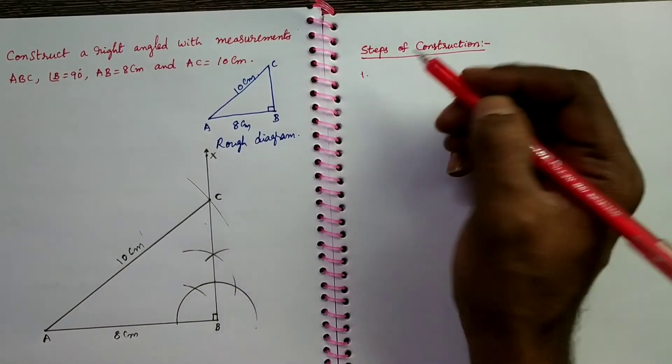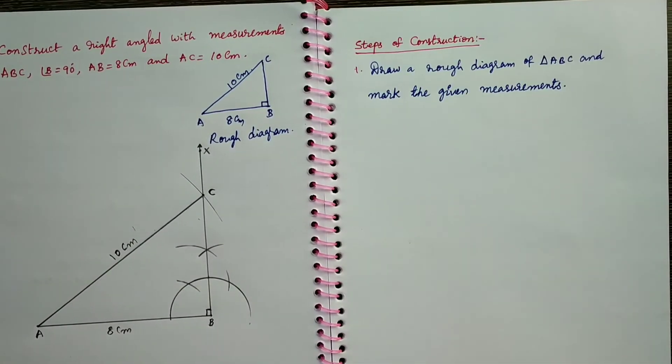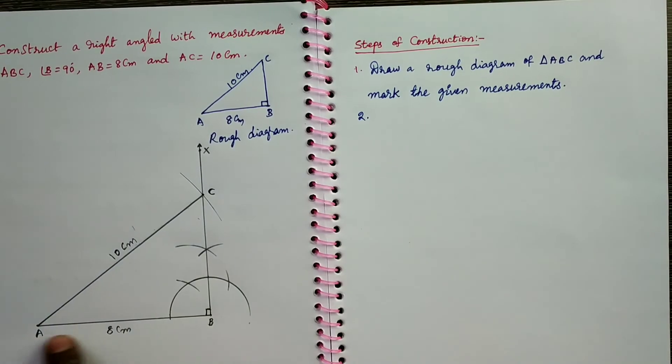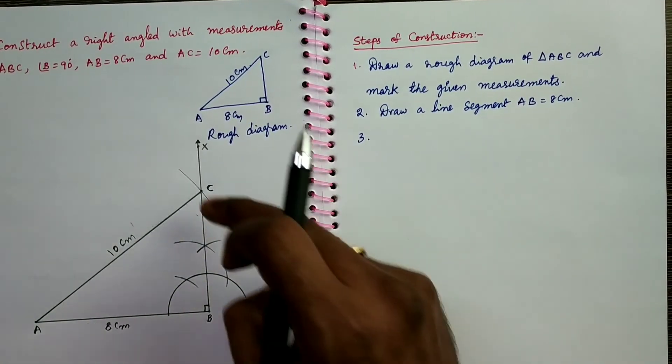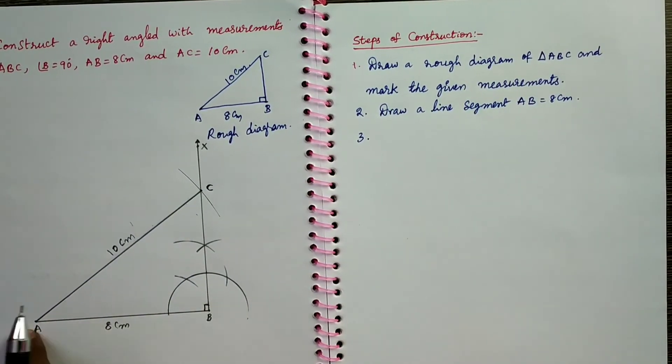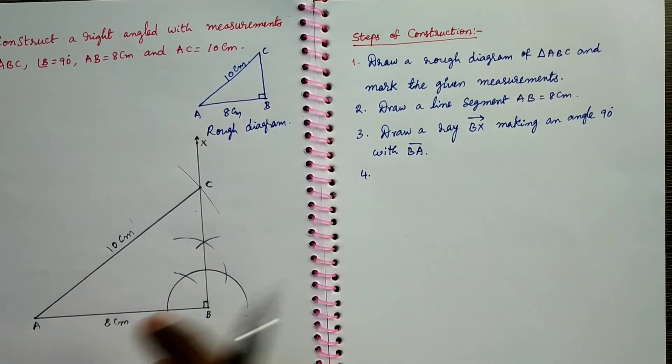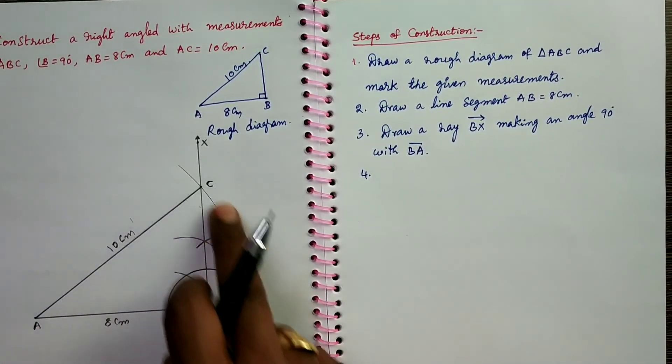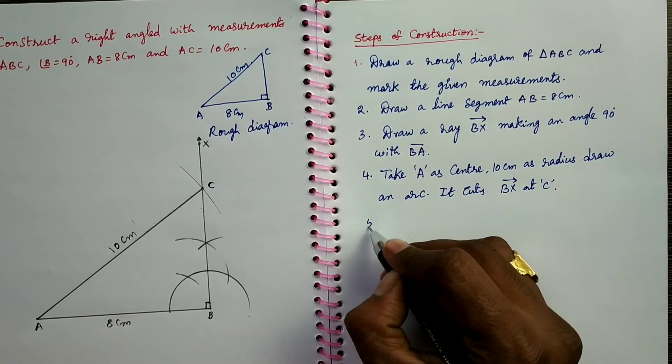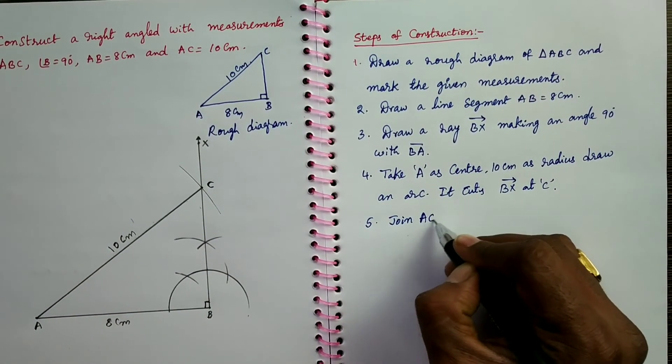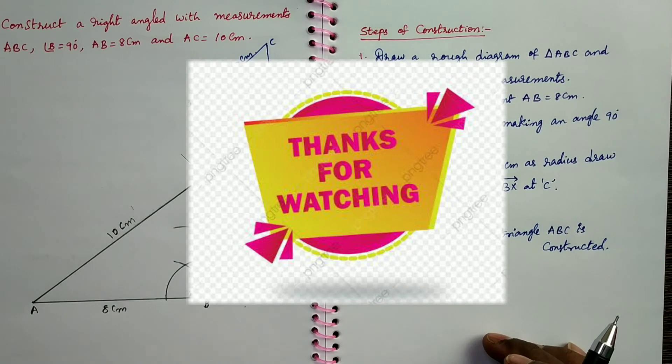First one: Draw rough diagram of triangle ABC and mark the given measurements. Second step is draw ray BX making an angle 90 degrees with BA. Next one: Take A as center, 10 cm as radius, draw an arc. It cuts the ray BX at C. Next step is join AC. Therefore the required triangle is constructed. The construction is completed.